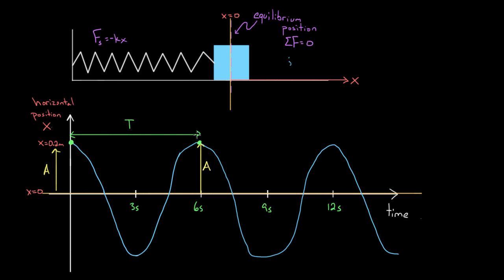And it makes sense — it's gone through two whole cycles once it gets back to that point. Notice you didn't have to measure the period from peak to peak. You can also measure it trough to trough or valley to valley. Look at three seconds to nine seconds: that's still six seconds, still one whole period. Or you can go from 7.5 seconds all the way to 13.5 seconds — that would also be one whole period.